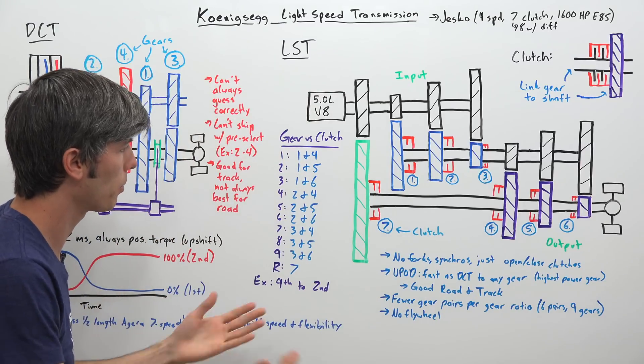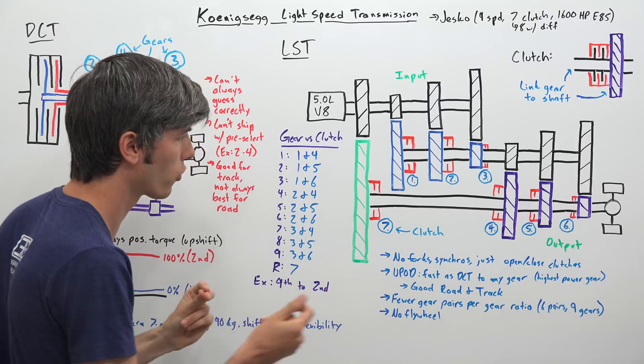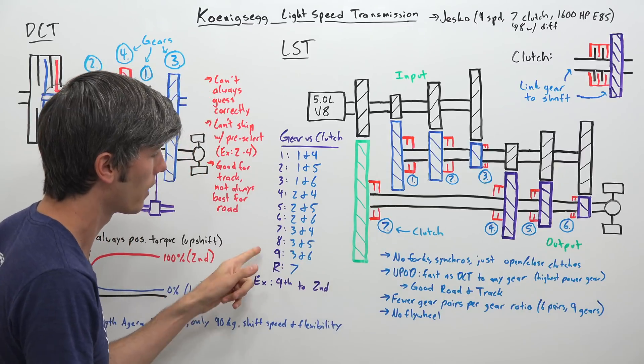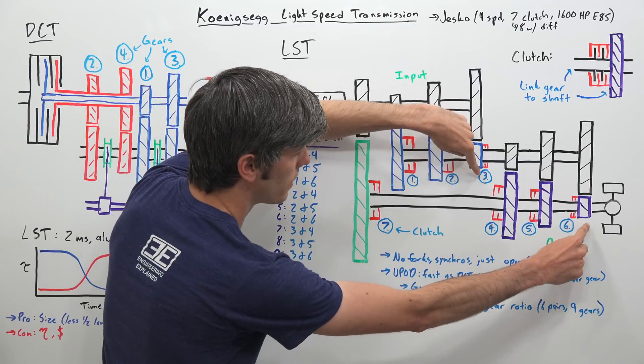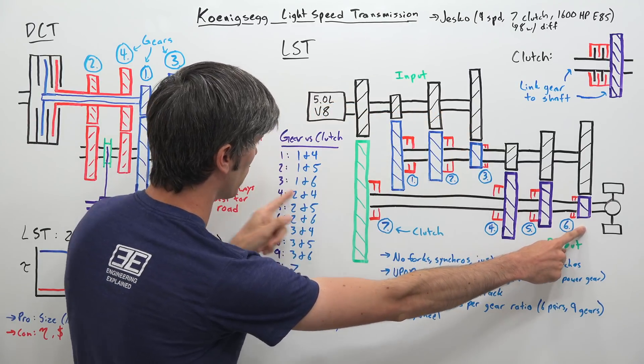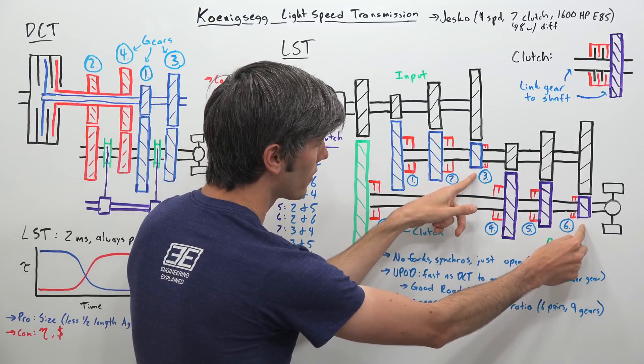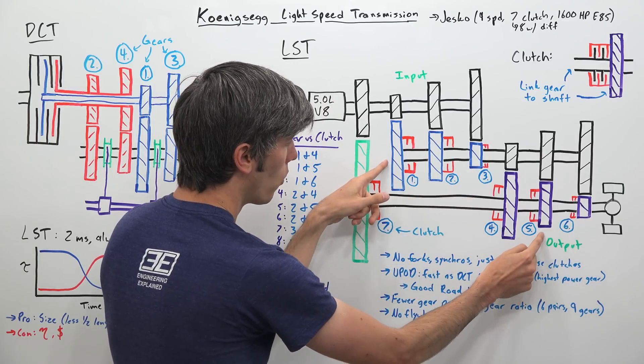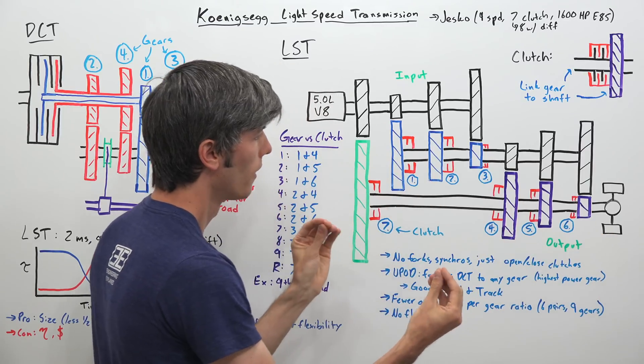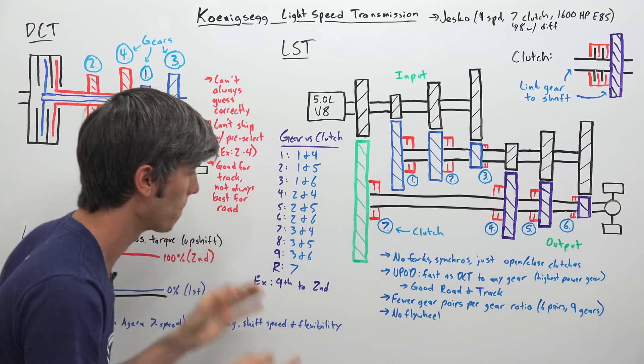And then just a very quick example of shifting, because you can shift from any one gear to any other gear extremely quickly. So we're going to go from ninth to second just to demonstrate that. So ninth gear, we're in three and six. These are both closed, everything else is open. We want to go to second gear, which is one and five. So we open up three and six, and then we immediately close one and five, and that puts us in second gear. So you're switching two clutches on, two clutches off simultaneously, and you make that gear change happen. Extremely, extremely fast.